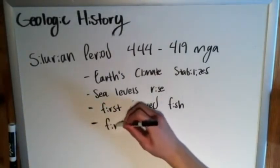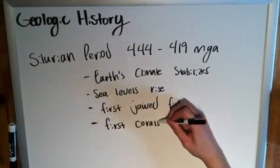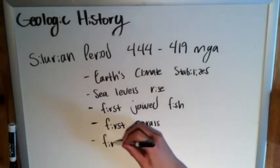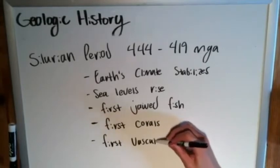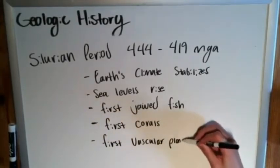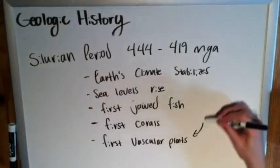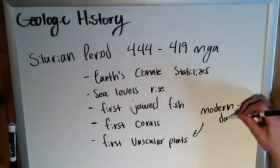The Silurian also brings our first corals and — this is an interesting one — our first vascular plants. Vascular plants are basically like plants that take root and have stems; they sound like modern day plants. Without going too in-depth, just think modern day plants.